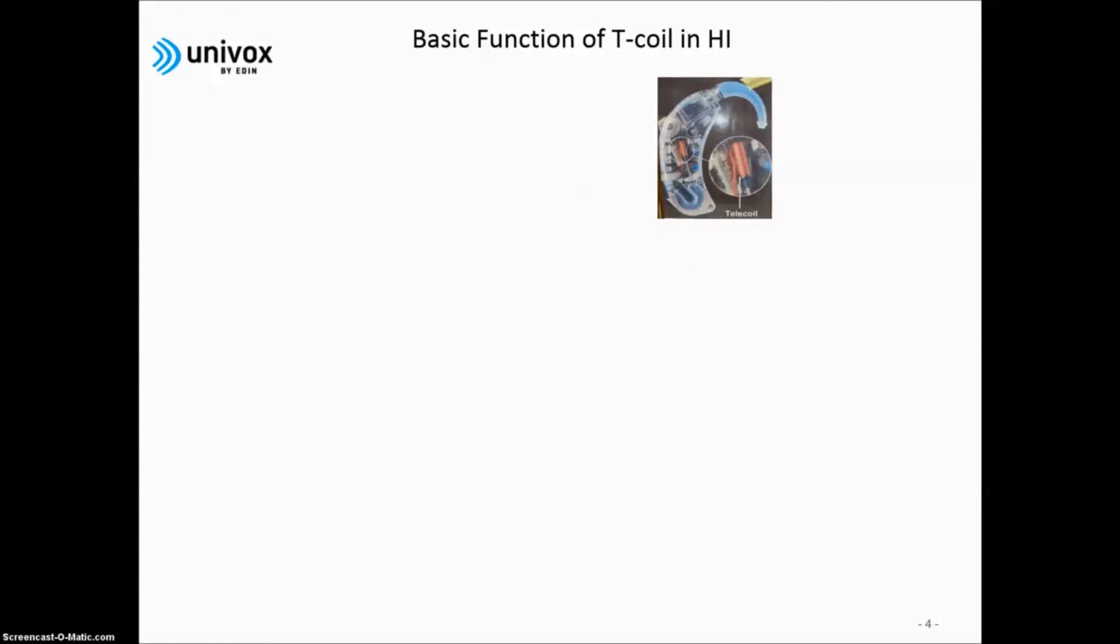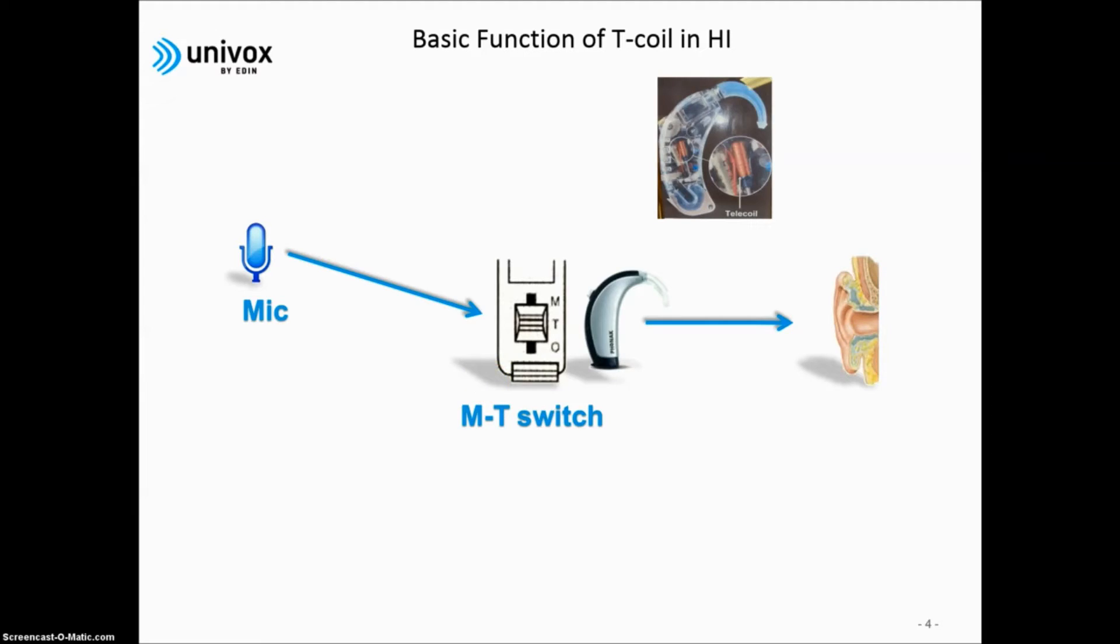In order to better understand the hearing loop system, let me explain the basic function of the hearing instrument with the built-in T-coil. There are two basic inputs, M and T. M stands for microphone and T stands for T-coil, which is used for sound transmission through a hearing loop. If the MT switch is in M position, the microphone signal is amplified and processed in order to best compensate for that individual's type of hearing loss. After the signal processing, the electrical signal is converted back to acoustic energy through the ear.